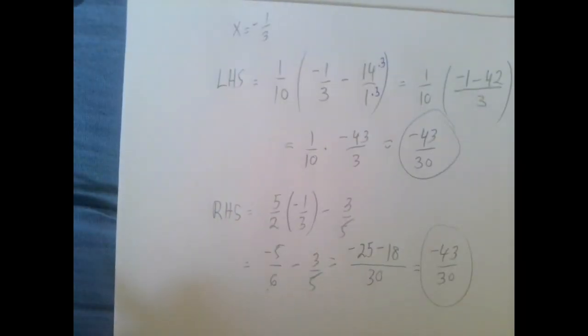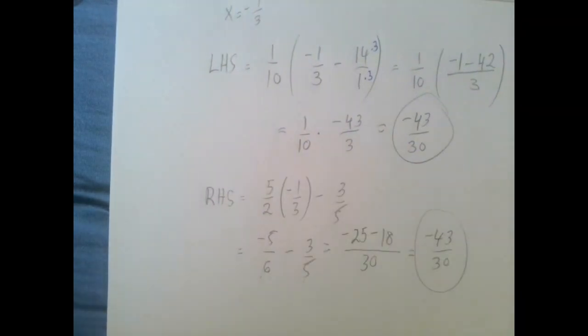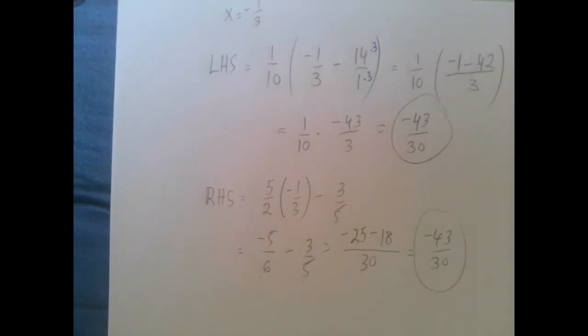So when x is negative 1 over 3, then both sides are a fairly unpleasant fraction, nonetheless they are equal to each other, so our answer is correct. Thank you for watching.